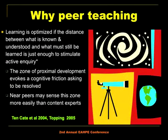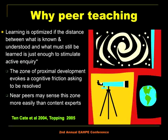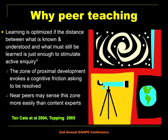We want to talk about peer learning because learning is optimized if the distance between what is known and what must be learned is just enough to stimulate active inquiry. Literature describes what is called the zone of proximal development, which evokes a cognitive friction that has to be resolved — the learner has a gap in knowledge they want resolved. Literature also shows that near peers sense this zone more easily than content experts, making it easier when a graduate student teaches undergraduates.